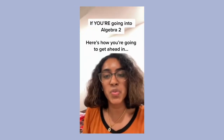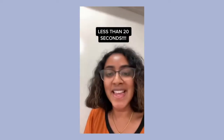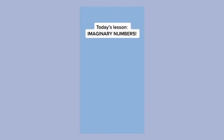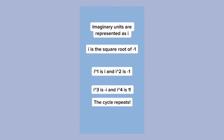If you're going into Algebra 2, here's how you're going to get ahead in less than 20 seconds. Today's lesson: imaginary numbers. Imaginary units are represented as i. i is the square root of minus 1. i¹ is i, i² is minus 1, i³ is minus i, and i⁴ is 1.